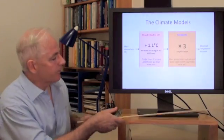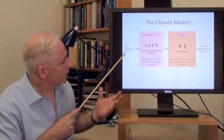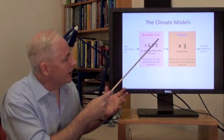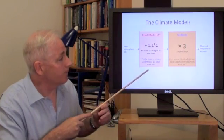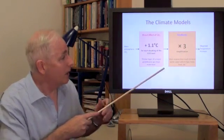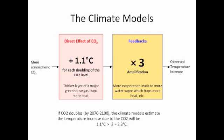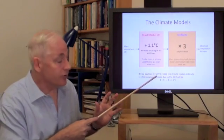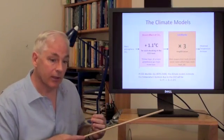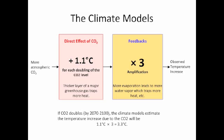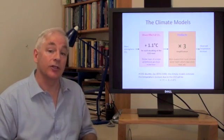Now, the way the climate models work is like this. Schematically, if you increase the amount of atmospheric CO2, the direct effect is that every time you double the concentration of CO2, you add about 1.1 degrees to the surface temperature. Then the climate models say that due to the feedbacks, you can triple that temperature — times 3 — and amplify. And that's what you actually observe. So if CO2 doubles by about 2070 to 2100, as we're on course to do, the climate models estimate that the temperature increase due to CO2 will be about 1.1 degrees times 3, or about 3.3 degrees — a fairly substantial amount.